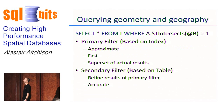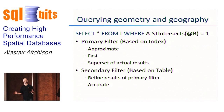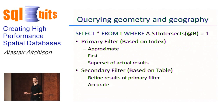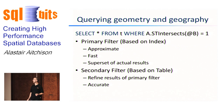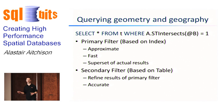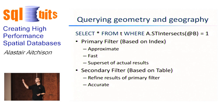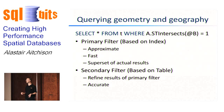It's worth explaining what I mean by spatial queries. If you look at the line at the top of this slide — select star from T where A intersects B equals one — that's what I mean by a spatial query: a query where in the WHERE clause you've got a condition using one of the methods of the geometry or geography data type.